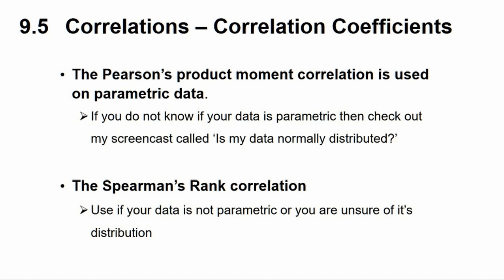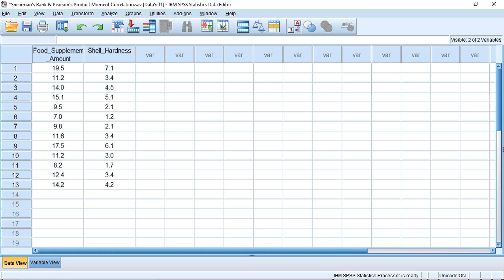The Pearson's product moment test is used on parametric data. If you do not know if your data is parametric then check out my screencast called Is my data normally distributed? If your data is not parametric or you are unsure then you can use the Spearman's rank correlation. I have already entered the data into SPSS from Table 9.8 so let's do the tests.